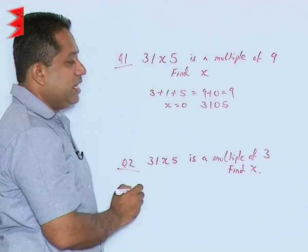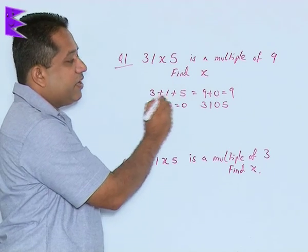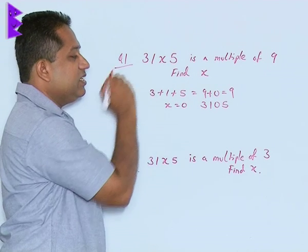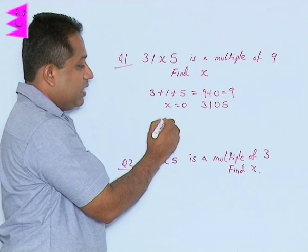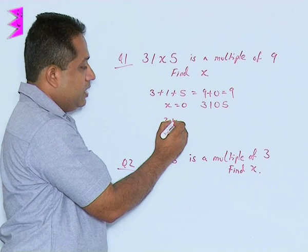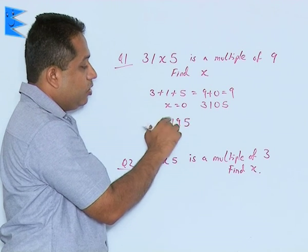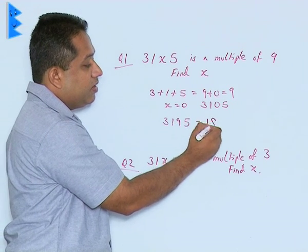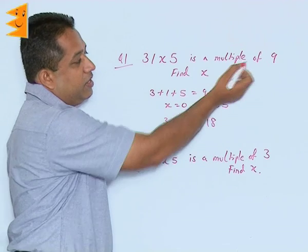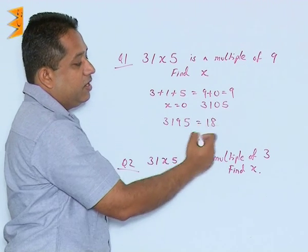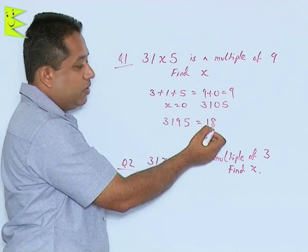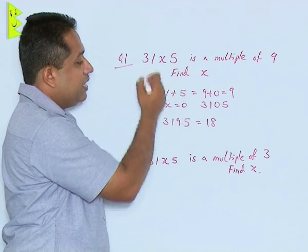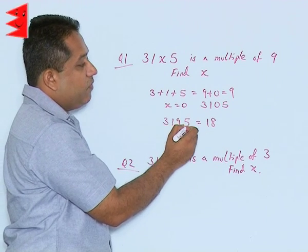The total comes out to be 18 because this total of 3, 1, 5 is already 9. If x is further 9, so we get 3195 and the total of this is 18 and we know that 18 is a multiple of 9, 9 into 2 is 18. So 18 is divisible which means that x could also have a value of 9.